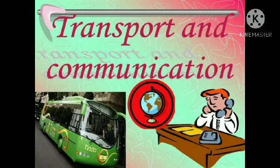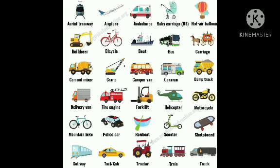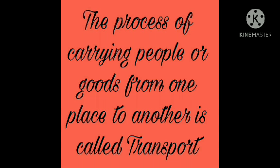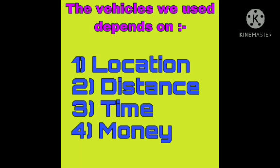An activity to move from one place to another is called travel. Aeroplanes, trains, taxis, buses, auto rickshaws, and motorcycles are called vehicles. The process of carrying people or goods from one place to another is called transport. We do not use the same means of transport to go to every place. The vehicle we use depends on the location of the place, distance to be covered, time available, and money we can spend.